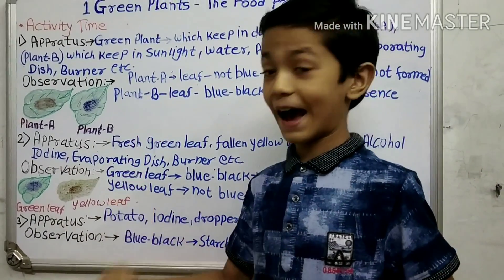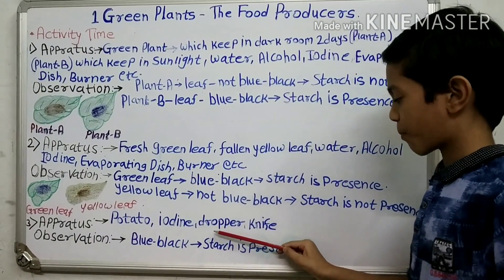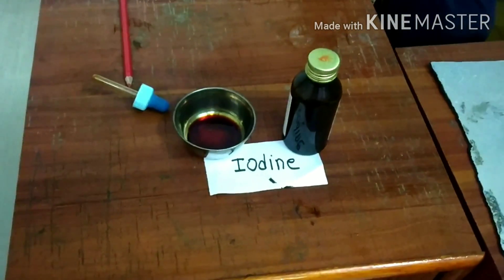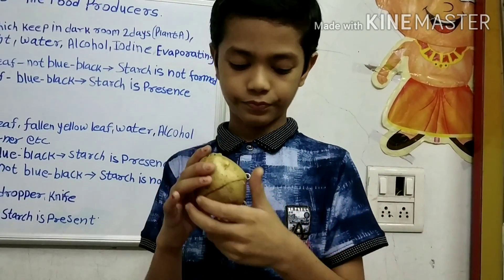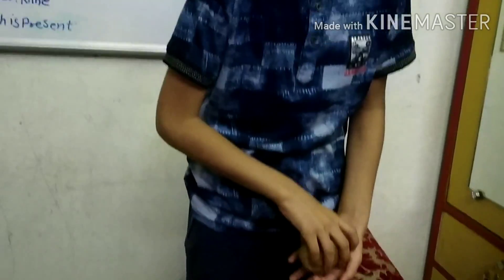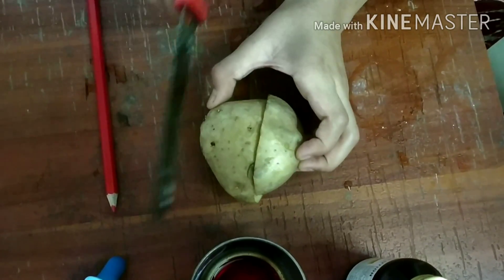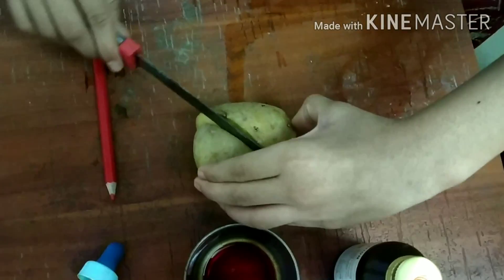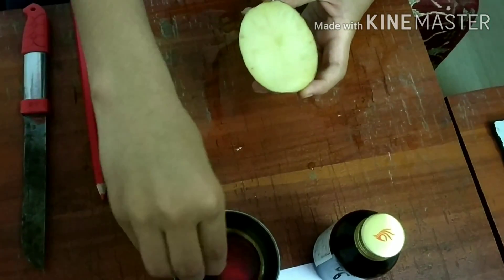Now this is the last, the third activity. To do this activity we will need a potato, iodine, a dropper, and a knife. Here is the potato, the iodine, and the dropper. Now we will cut the potato — be careful while cutting, we have to cut the potato and not our fingers. Now let's put some drops of iodine on the potato.